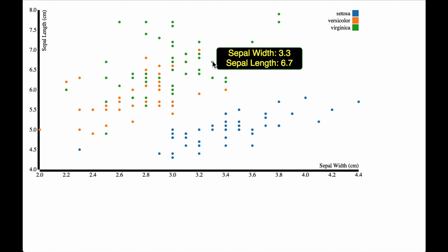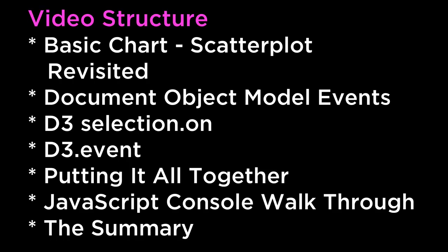Though we have barely scratched the surface of DOM events, d3 event bindings, and what events can happen, the basics of what we have learned here are applicable in more intermediate and advanced data visualizations constructed with d3. The summary: this video covered basic chart scatterplot revisited, document object model events, d3 selection dot on, d3 dot event, putting it all together, JavaScript console walkthrough, and the summary.